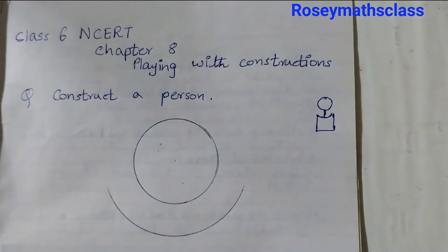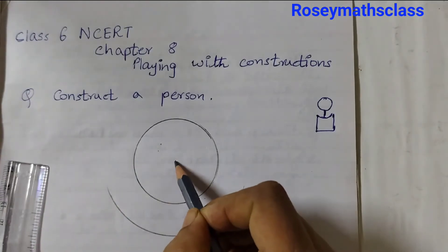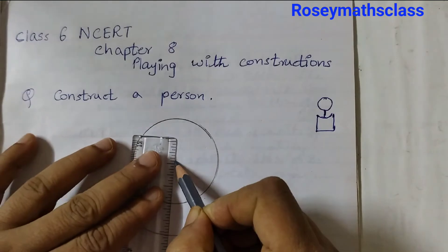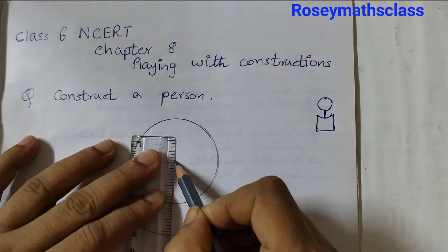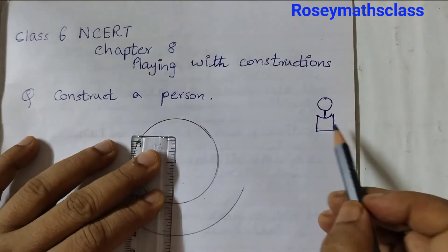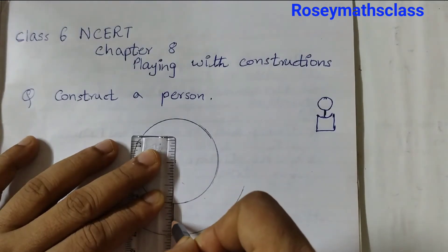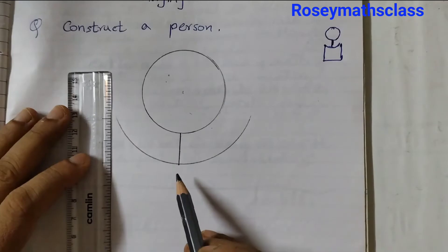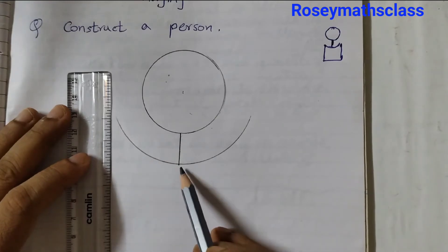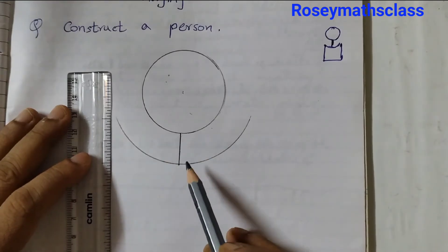Now we will take a pencil. Here is the center of the circle. Place your ruler like this and draw a straight line from this point. You need to take equal distance on either side of this line.